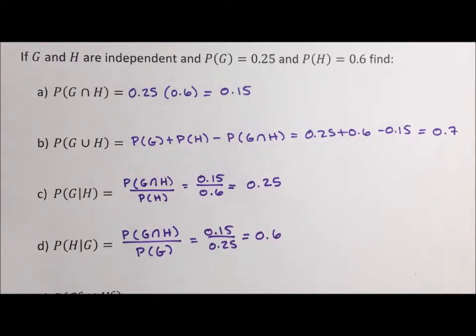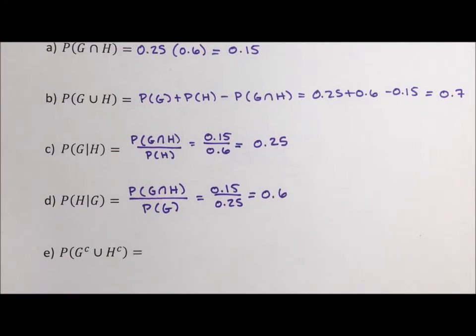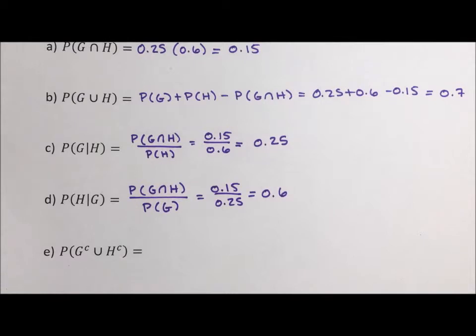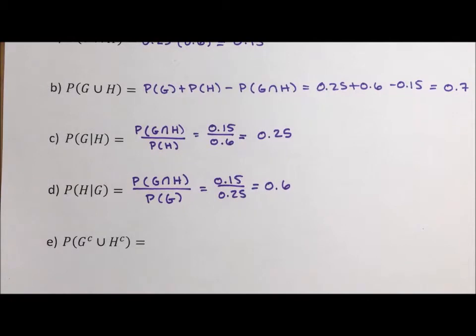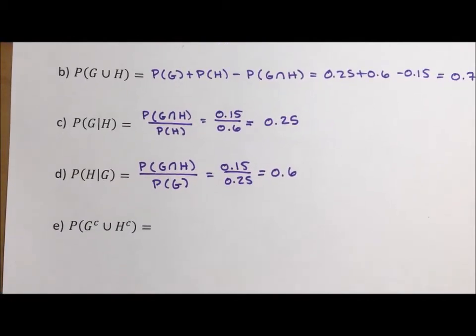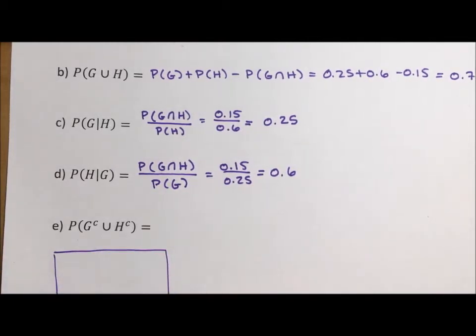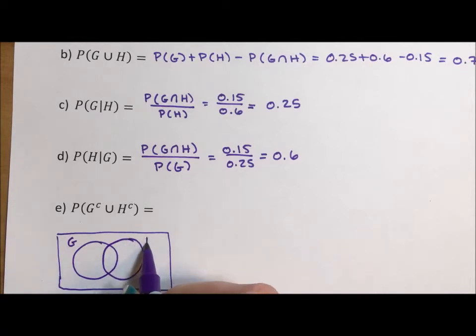All right, and then the last one we have here is the probability of G complement union H complement. Well, if we were to do a quick visual of G and H, G complement, we're doing the union, so we're including everything.